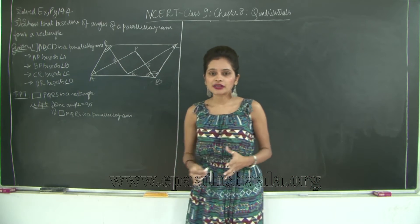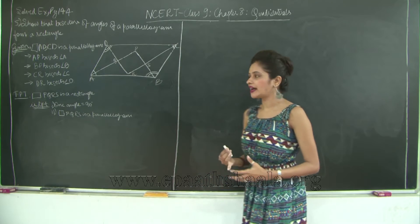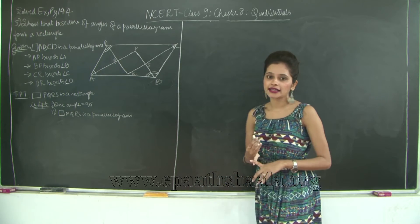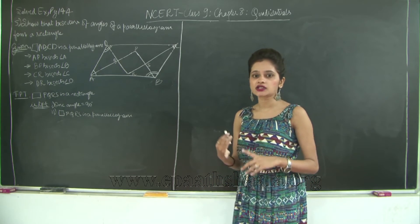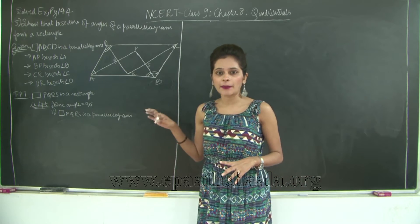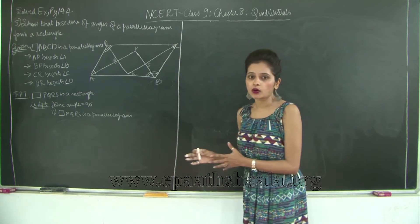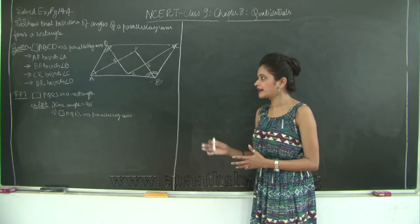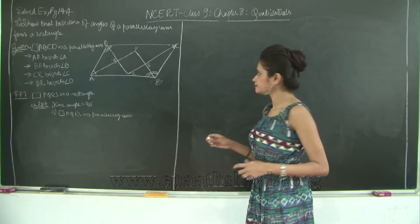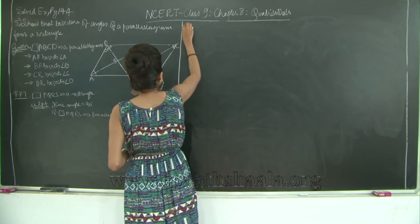In order to prove something is a rectangle, we need to prove that at least one angle is 90 degrees as well as the quadrilateral is a parallelogram. So let us see how we are going to go ahead and prove this.